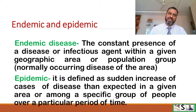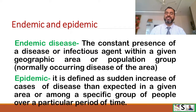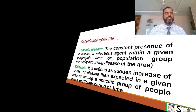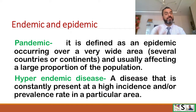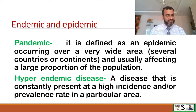Endemic disease refers to the constant presence of a disease or infectious agent within a given geographical area or population group or community — it is the normally occurring disease of the area. Epidemic is defined as a sudden increase in the number of cases of a disease beyond what is expected in a given area or community over a particular period of time. Pandemic is defined as an epidemic occurring over a very wide area, where several countries or continents are affected, usually affecting a large proportion of the population. A disease that is constantly present at high incidence in a particular area is known as hyperendemic disease.